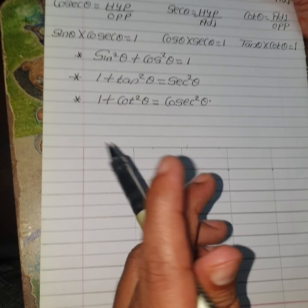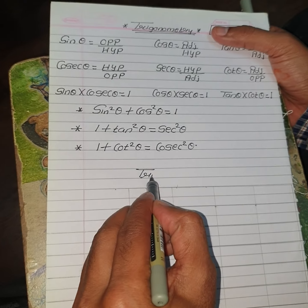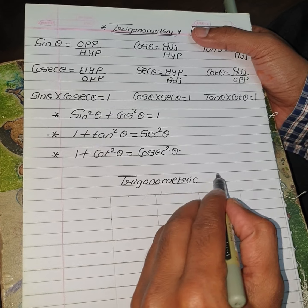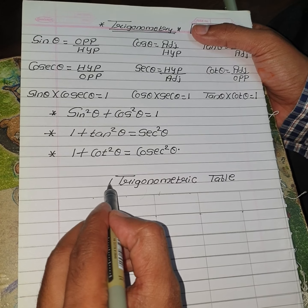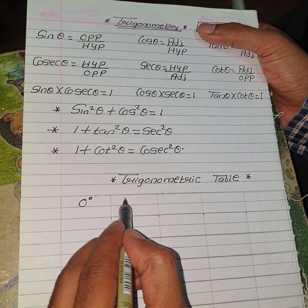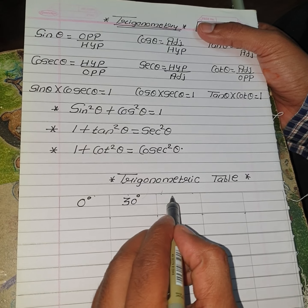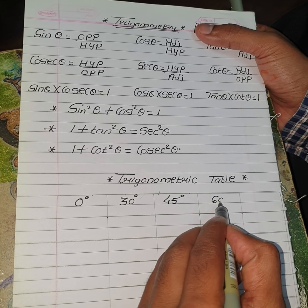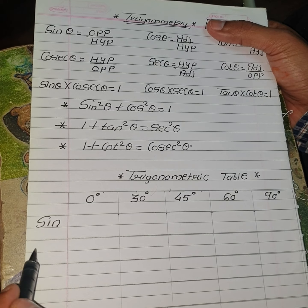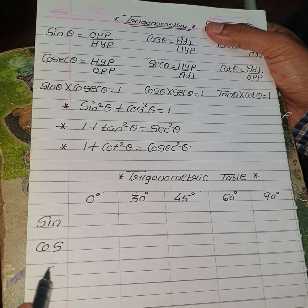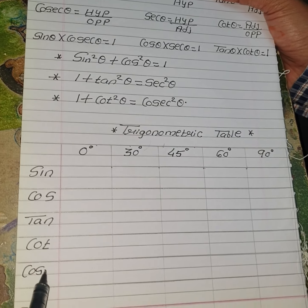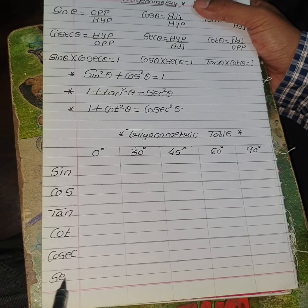Now let us see the Trigonometric Table. In the Trigonometric Table, we consider standard angles: 0 degrees, 30 degrees, 45 degrees, 60 degrees, and 90 degrees. The ratios we will fill in are Sin, Cos, Tan, Cot, Cosec, and Sec.